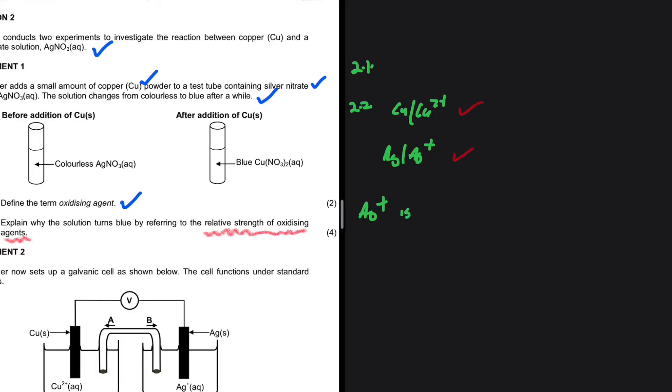Ag⁺ is a stronger oxidizing agent compared to Cu²⁺. We're going to have copper losing two electrons to form Cu²⁺, and this Cu²⁺ is where the color blue is coming from. The color of copper 2 plus is actually blue.